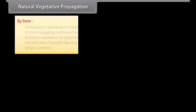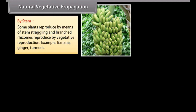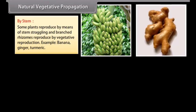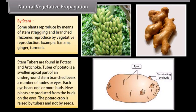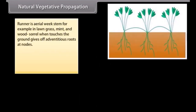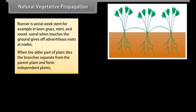By stem — some plants reproduce by means of stem stolons, and branched rhizomes reproduce by vegetative reproduction. Examples include ginger and turmeric. Stem tubers are found in potato and artichoke. The tuber of potato is a swollen apical part of an underground stem branch that bears a number of nodes or eyes; each eye bears one or more buds, and new plants are produced from these buds. The potato crop is raised by tubers and not by seeds. A runner is an aerial weak stem — for example, in lawn grass, mint, and wood sorrel — that when it touches the ground gives off adventitious roots at nodes. When the older part of the plant dies, the branches separate from the parent plant and form independent plants.